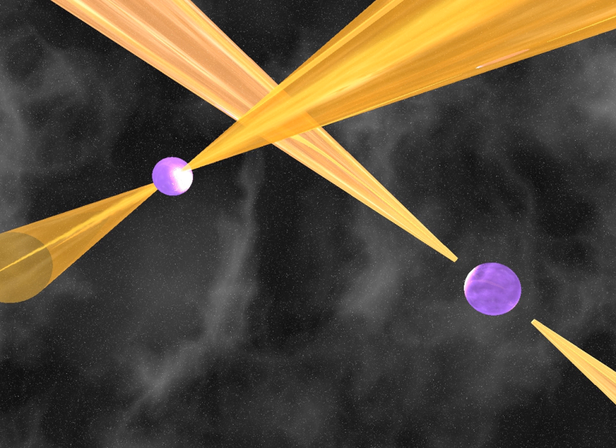The first binary pulsar, PSR B1913+16 or the Hulse-Taylor Binary Pulsar, was discovered in 1974 at Arecibo by Joseph Hooton Taylor Jr. and Russell Hulse, for which they won the 1993 Nobel Prize in Physics.